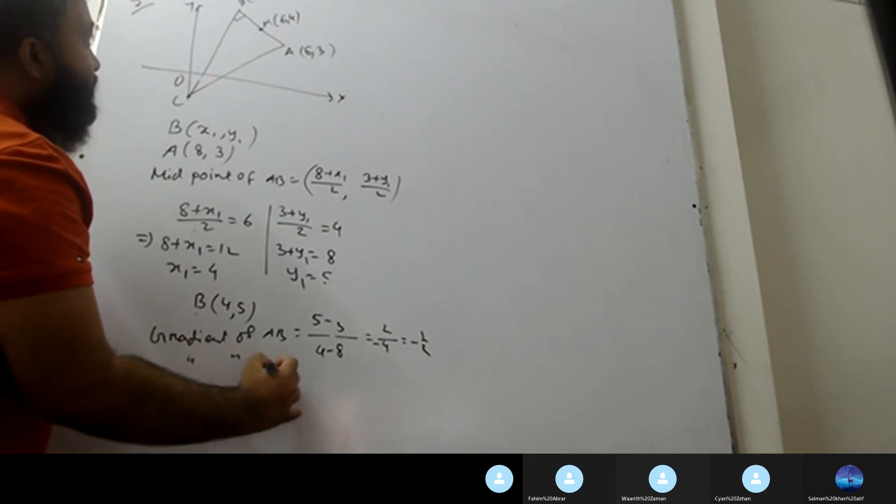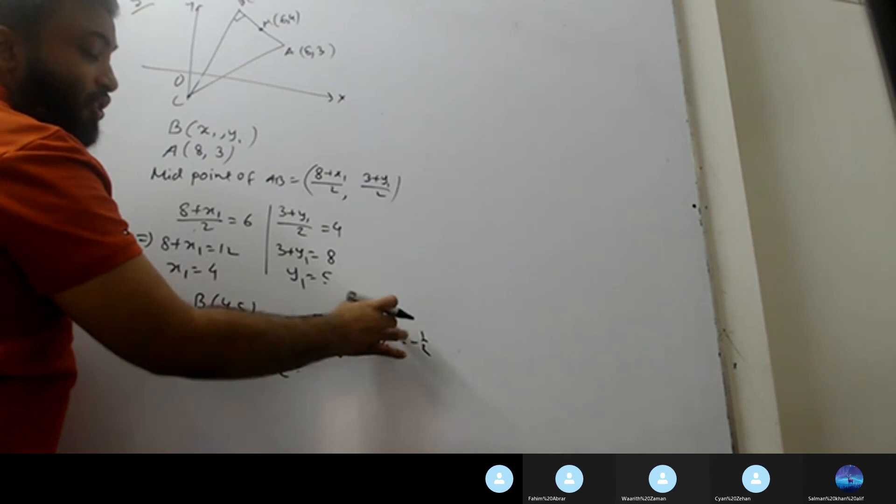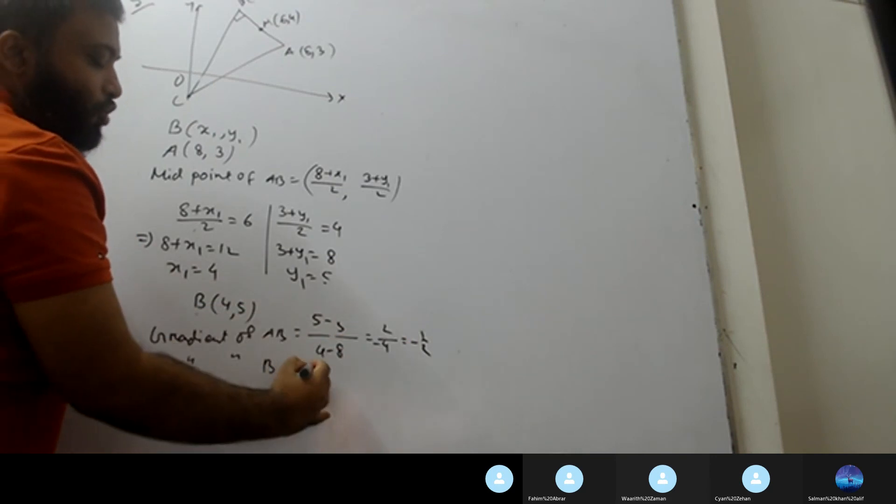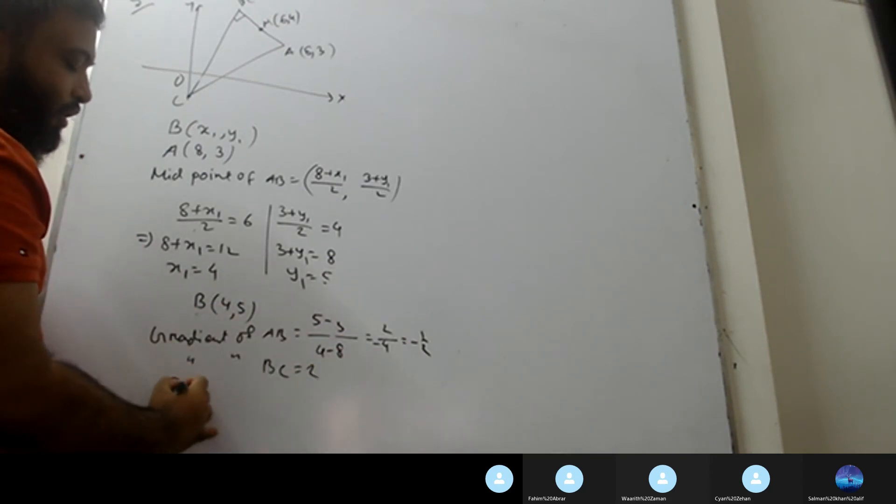So gradient of BC equals minus 1 divided by minus 1 by 2, that means 2. The equation of BC has gradient 2.